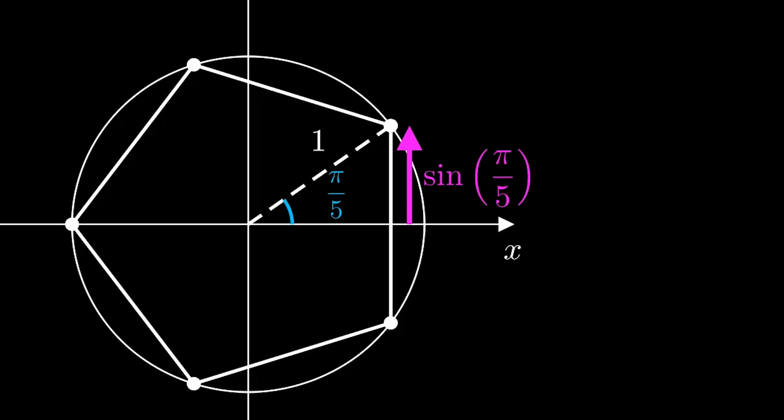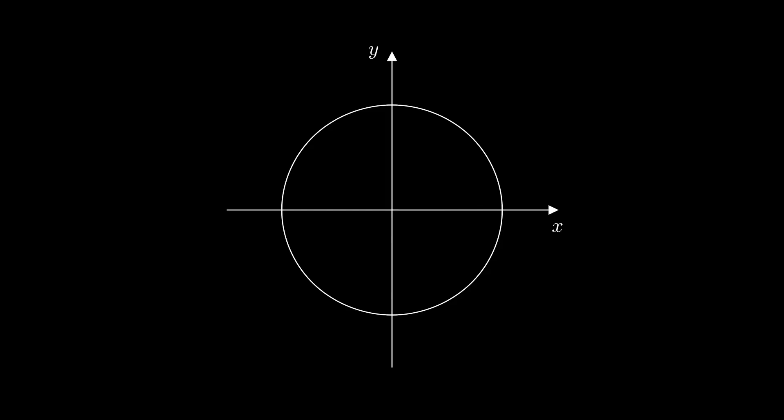Before we get to that, let's look at the sine of π/6 as an example. Pi radians, remember, is 180 degrees, so π/6 is one-sixth of the way to 180 or 30 degrees.